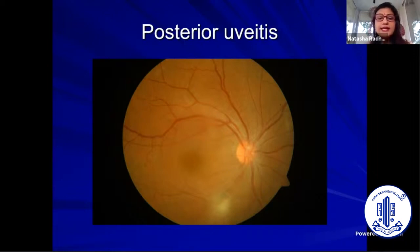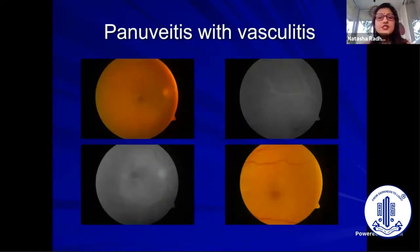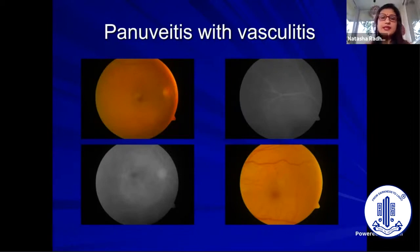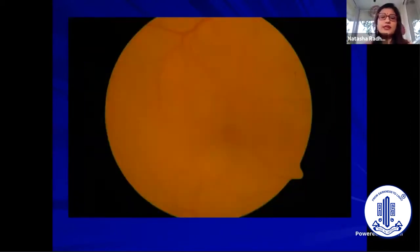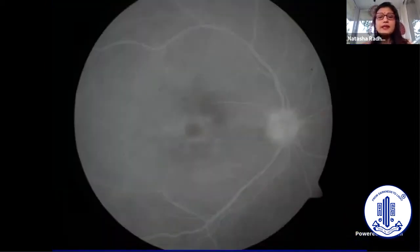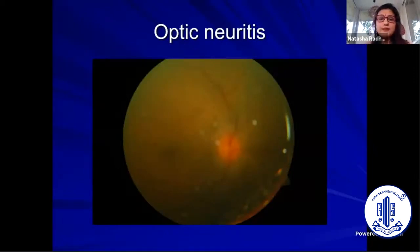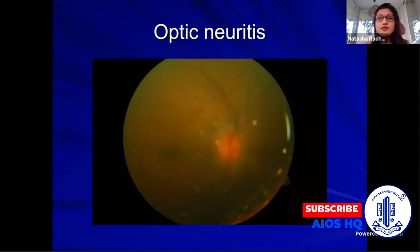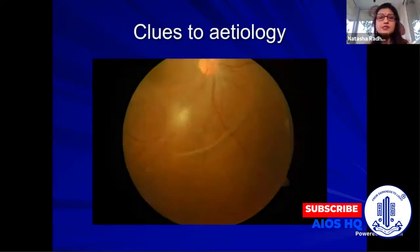Never diagnose anterior uveitis unless you have done a complete examination of the eye, including dilated fundus examination of the same eye as well as the other eye. Sometimes you may be dealing with intermediate uveitis with small anterior segment inflammation misdiagnosed as anterior uveitis, or a posterior uveitis with anterior spillover. Inflammatory optic neuritis is another complication of anterior uveitis that you will miss if you have not examined the posterior segment.